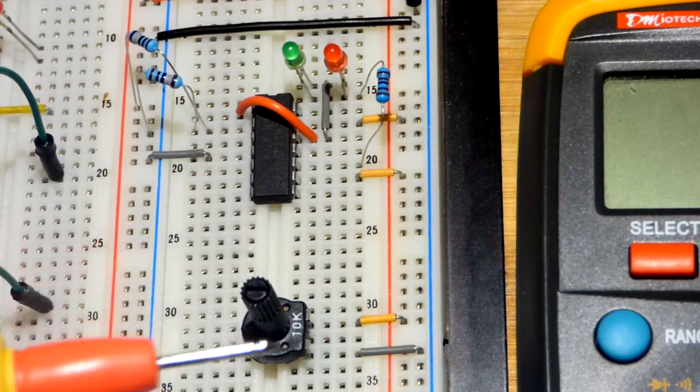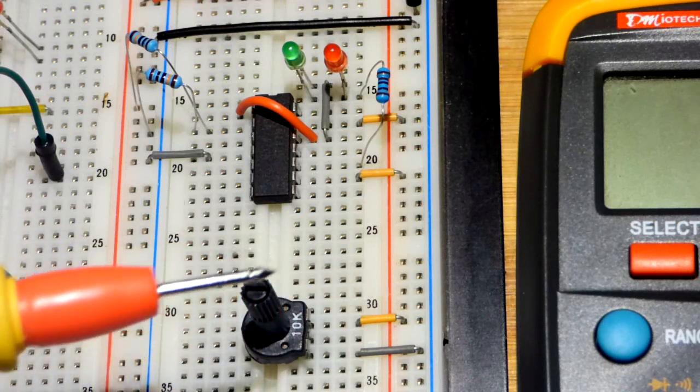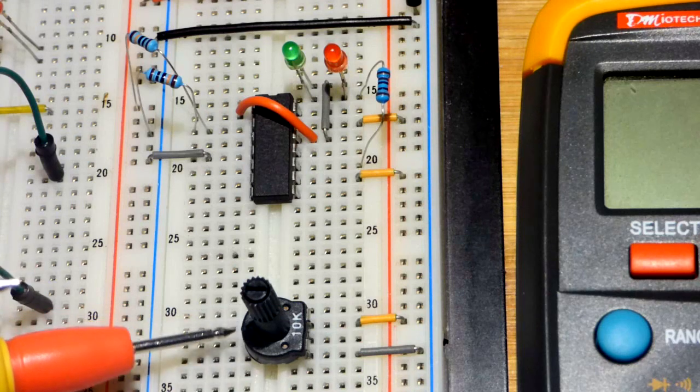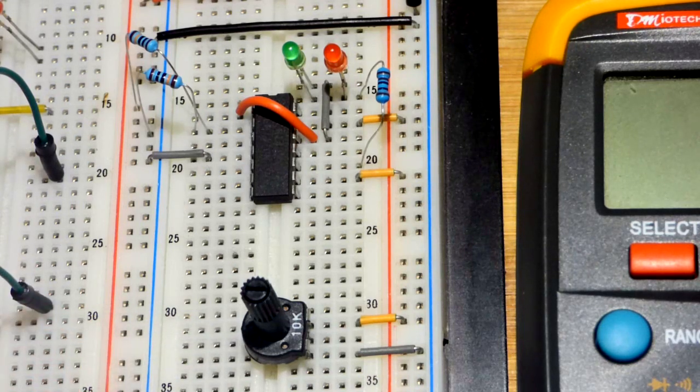So we have a trim pot down here. All the way to the positive rail will be 9 volts, all the way to the negative rail will be negative 9 volts, and the halfway point will be 0 volts.